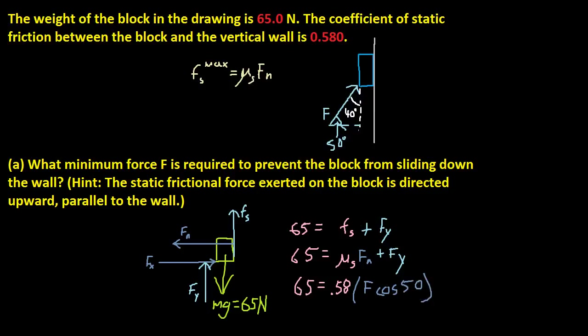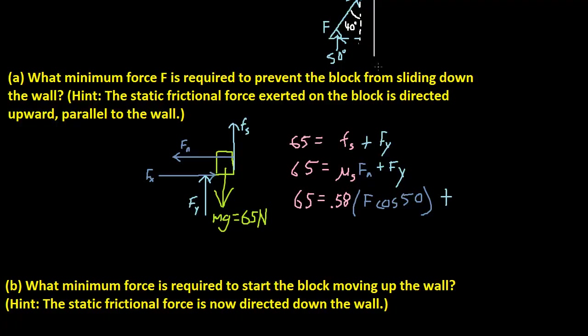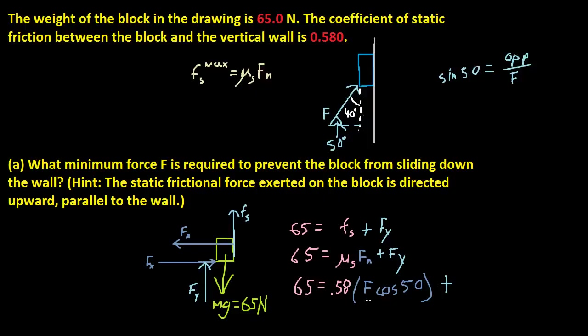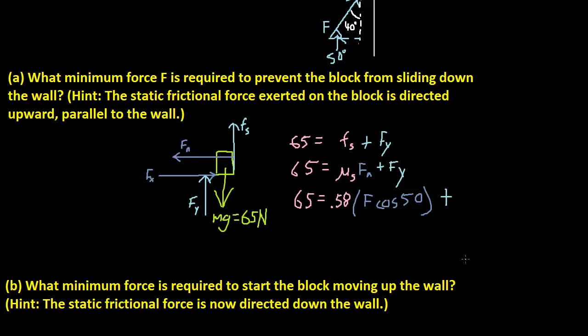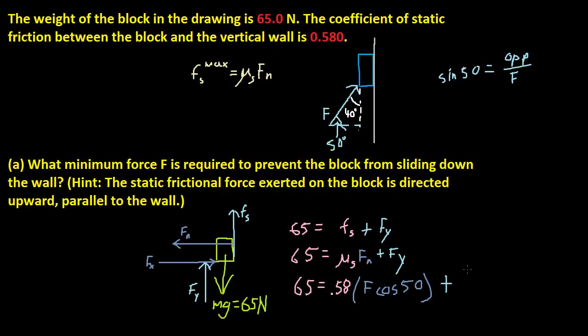And then plus Y is calculated by sine now, because it's opposite over hypotenuse. Sine of 50 is opposite over hypotenuse, which is force, because hypotenuse is force. If you multiply force by here, you get force times sine 50 equals opposite. So that's the height, or that's the Y. And that's how you calculate for X too.